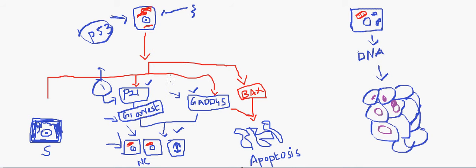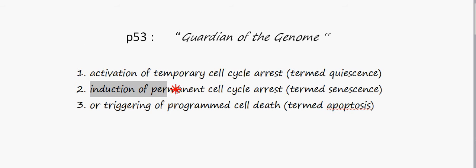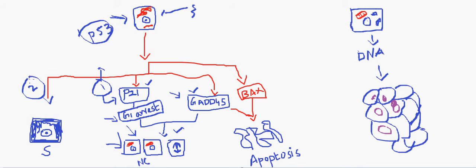Here we see the second mechanism of the TP53 gene, which is the induction of permanent cell cycle arrest called senescence. In case the repair fails, one of the mechanisms is by inducing senescence. The cell may be an old cell, which p53 can detect because of chromatin changes in the particular cell that alter gene expression. It is easier for the p53 gene to identify that this is an old cell and permanently stop cell division.